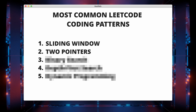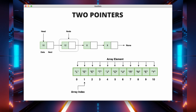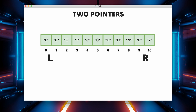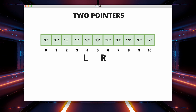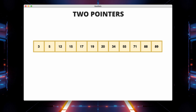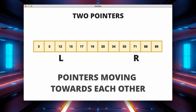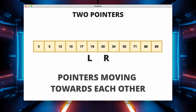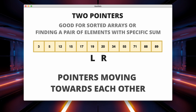The second pattern on our list is two pointers. The two pointers pattern is a technique frequently used in programming and competitive coding, especially for solving problems related to arrays or linked lists. This pattern involves using two pointers that traverse the array or linked list to solve the problem efficiently. One common scenario is two pointers moving towards each other: initialize the two pointers at the beginning and end of the array and move them toward each other, maintaining a certain condition. This approach is often useful when dealing with sorted arrays or finding a pair of elements with a specific sum.